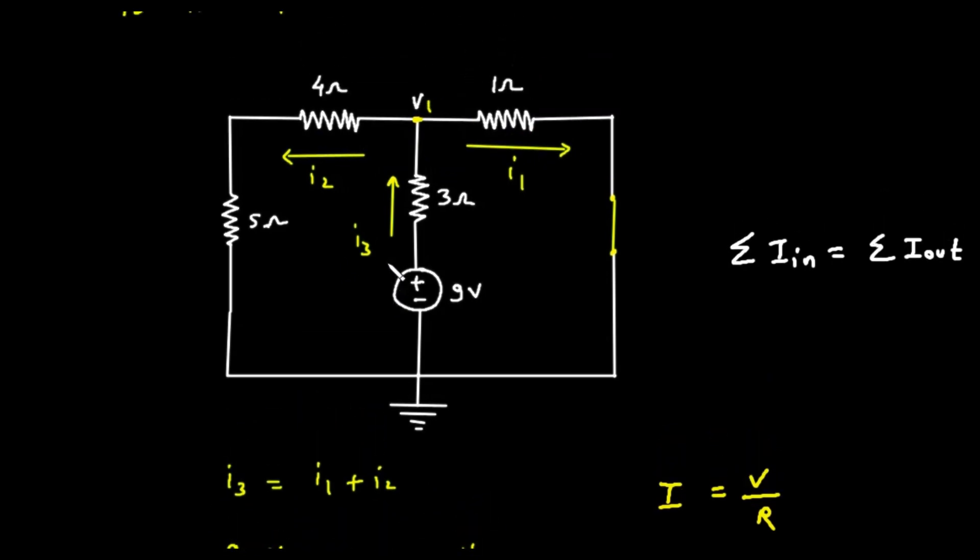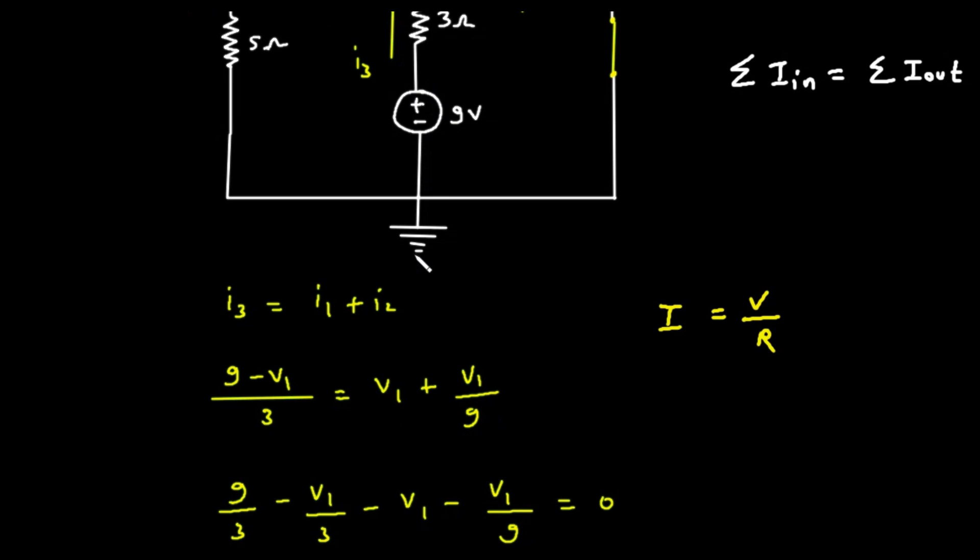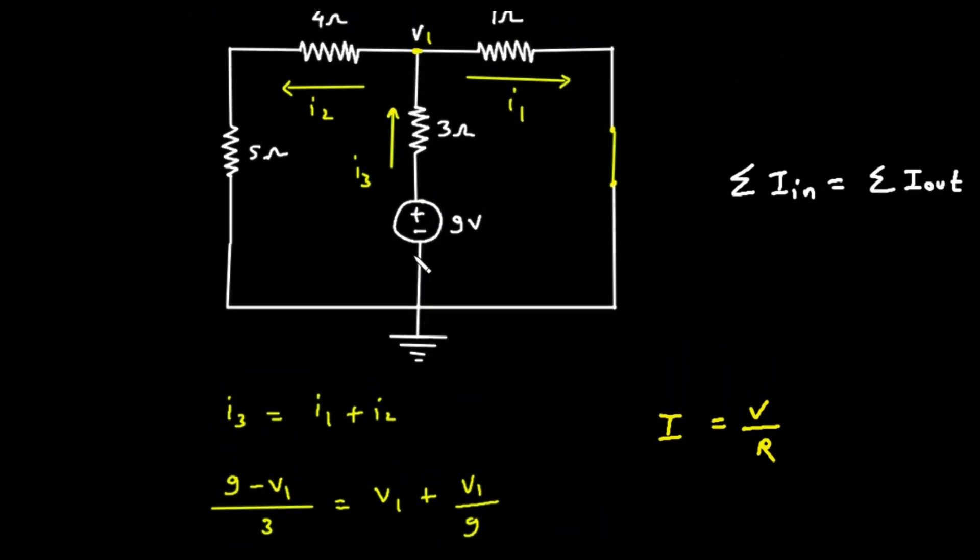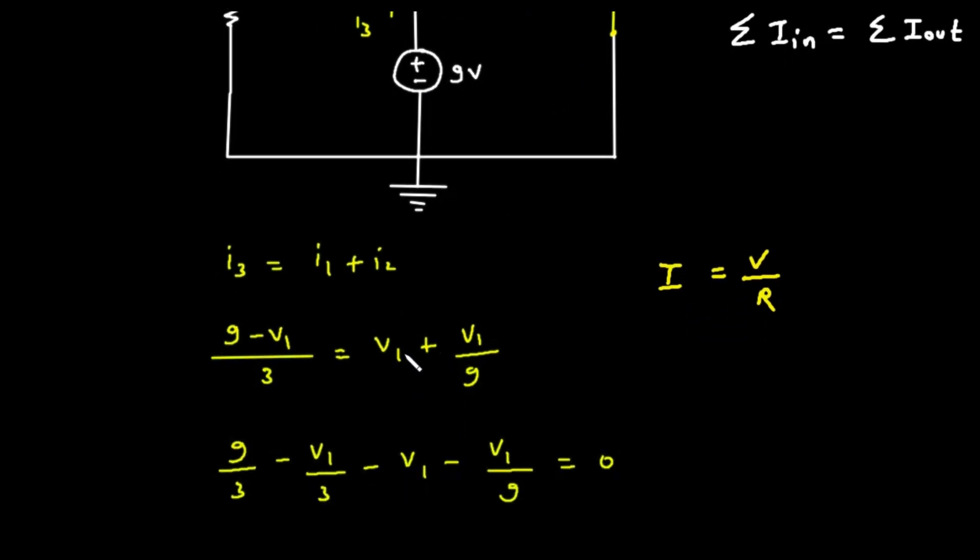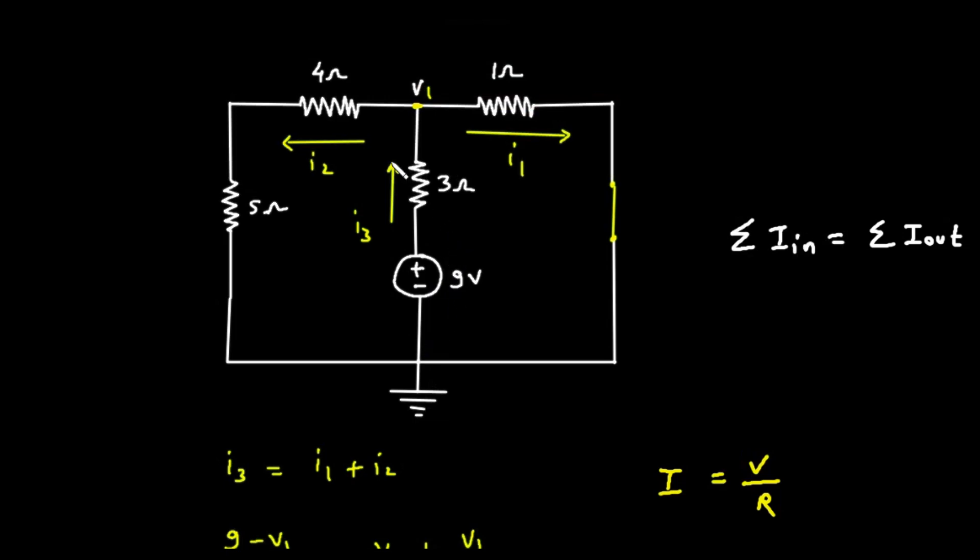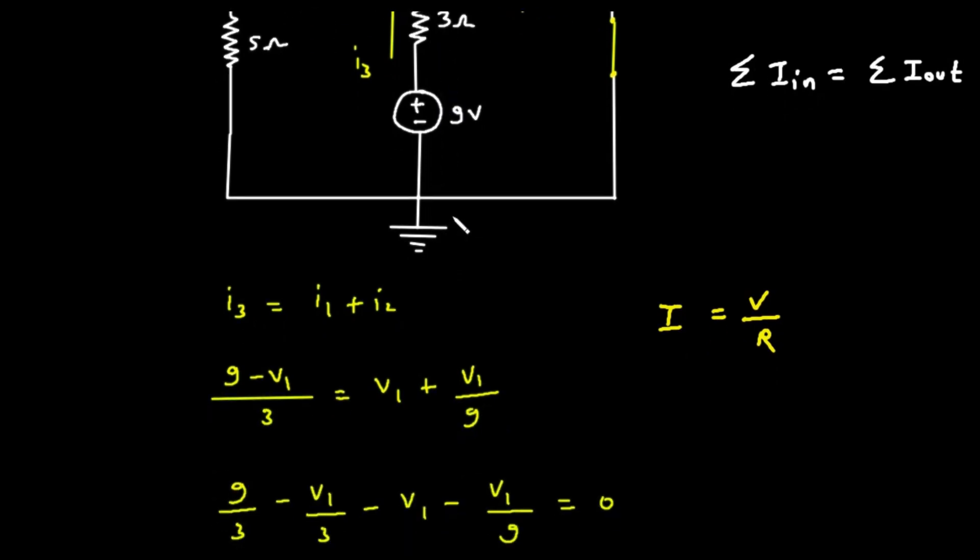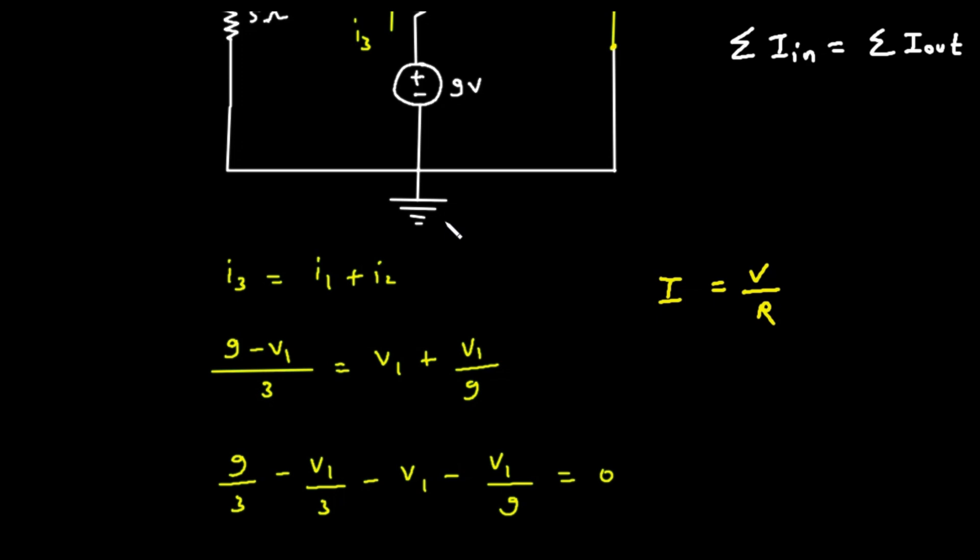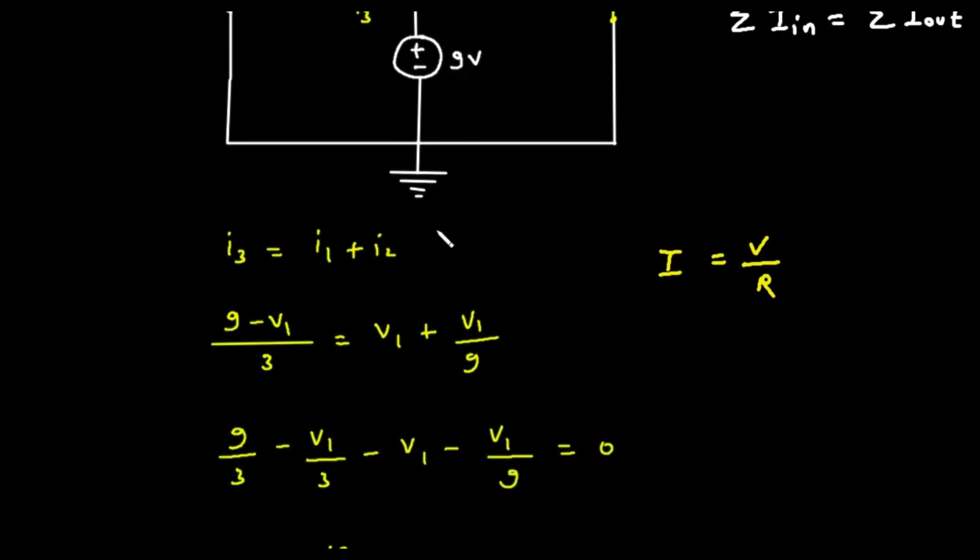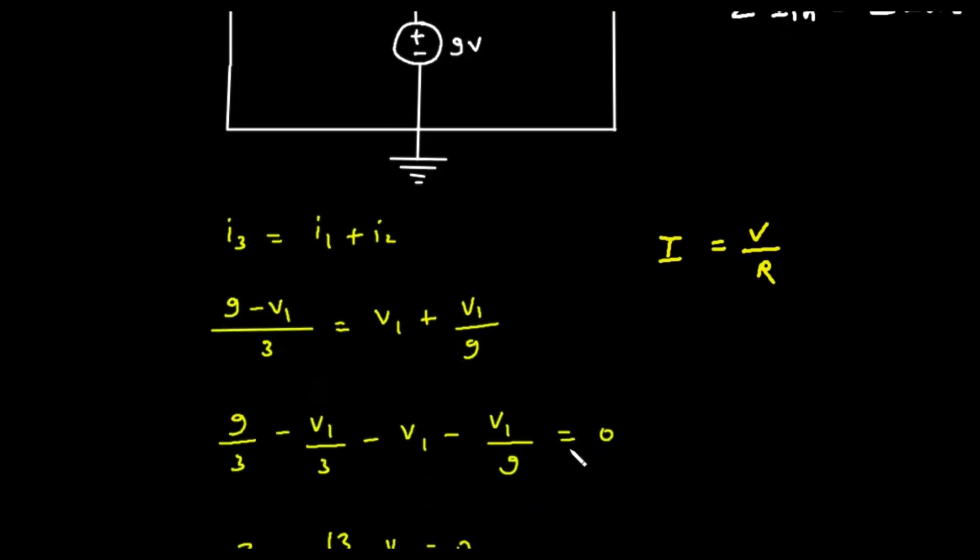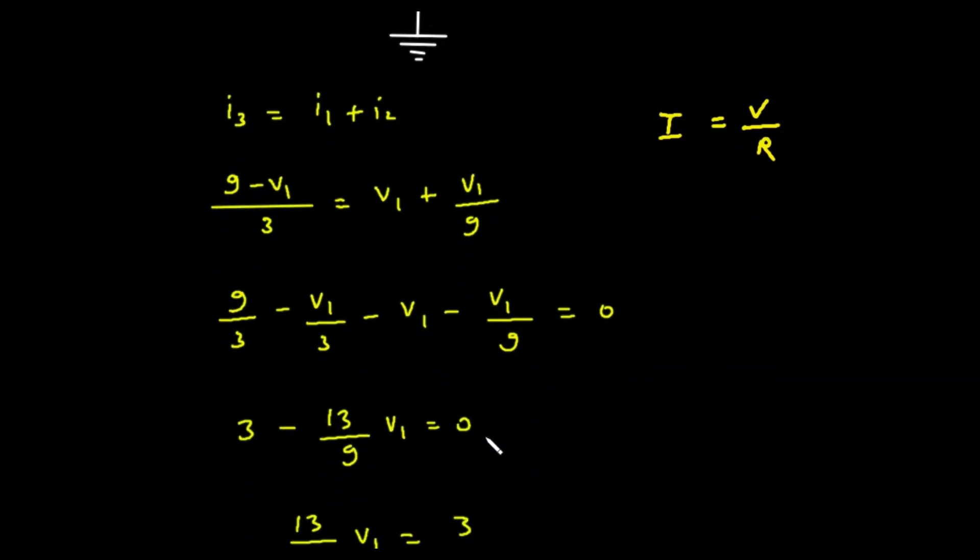Now we need to write an expression for each of these currents using Ohm's Law, which states the current is equal to voltage divided by resistance. The current flowing to the left is the voltage at our node, V1, divided by the total resistance in that path, which is 9 ohms. So, the current is V1 divided by 9. The current flowing to the right is the voltage V1 divided by the resistance in that path, which is 1 ohm. So, the current is V1 divided by 1. The current flowing downwards is a little different. It flows from the node V1 towards the 9-volt source. The voltage difference across the 3-ohm resistor is V1 minus the 9-volts from the source. So, the current is V1 minus 9, divided by 3. Now, we set the sum of all these outgoing currents to 0 according to KCL. V1 divided by 9, plus V1 divided by 1, plus V1 minus 9 divided by 3, equals 0.